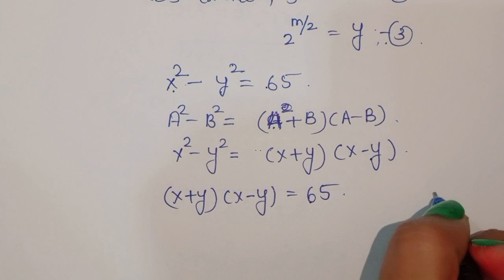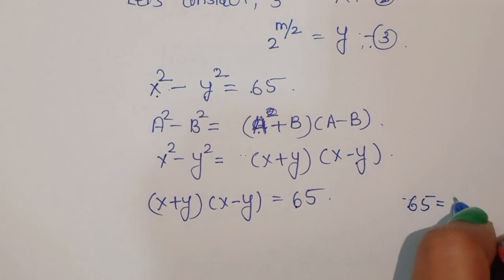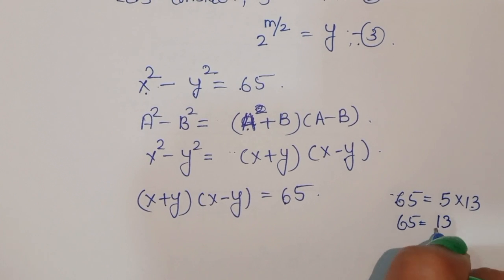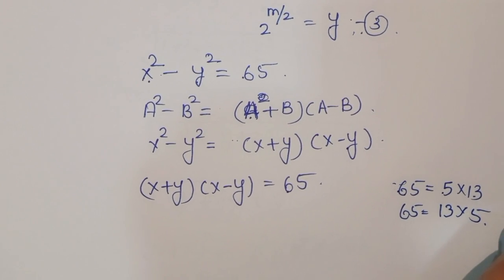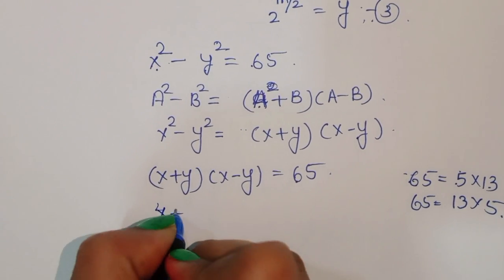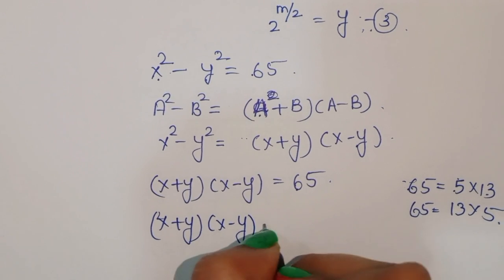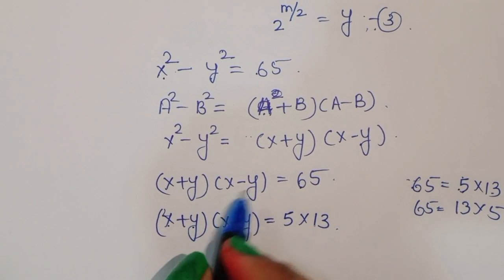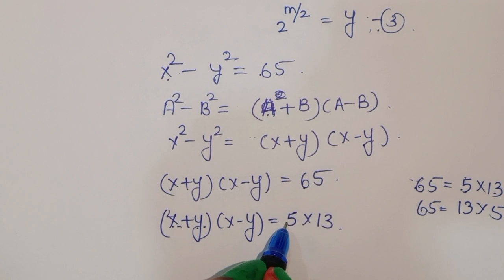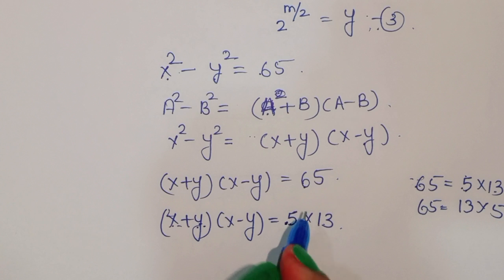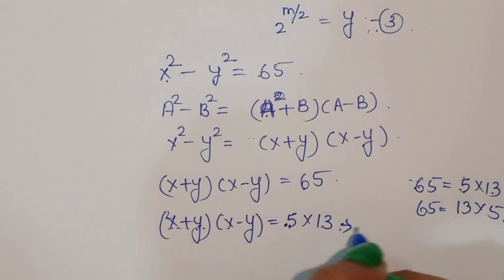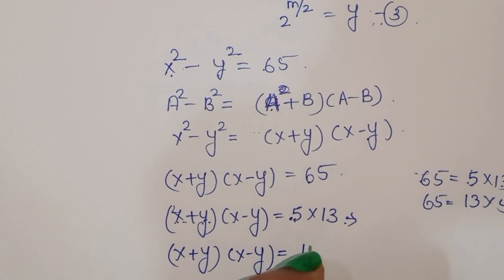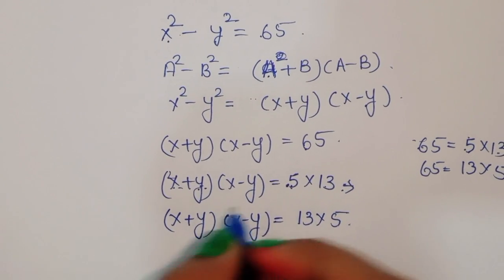Now, factors of 65: we can write 65 as 5 times 13, or 65 as 13 times 5. So using these factors, x plus y times x minus y is equal to 5 times 13. But you can see here, x plus y when comparing with the first term — that is 5 — this is a positive value and 5 is less than 13, so we can't consider this. So in the next factoring, x plus y times x minus y is equal to 13 times 5.